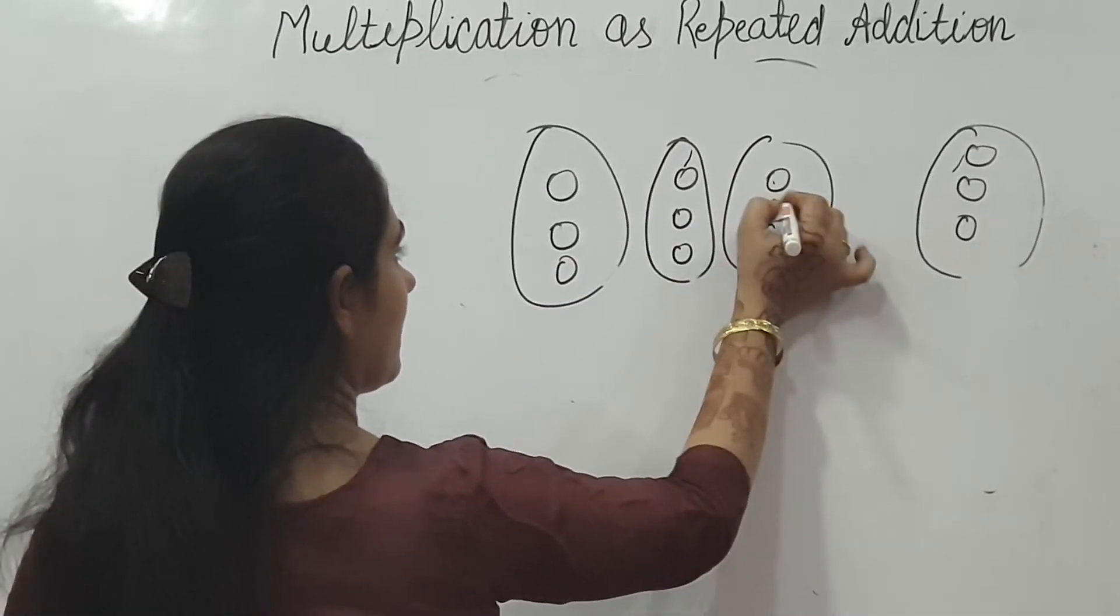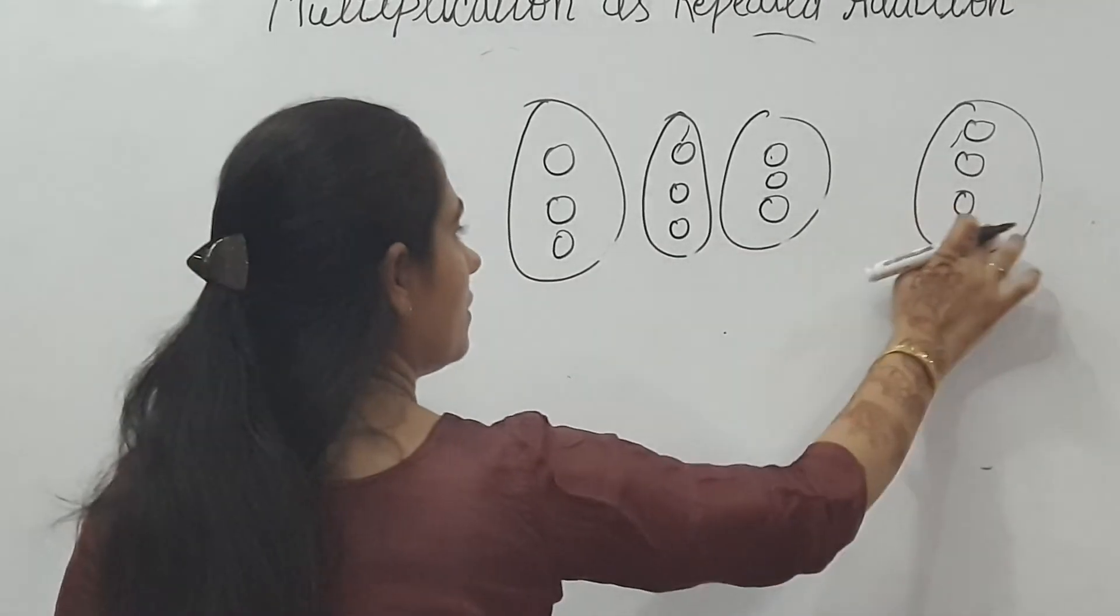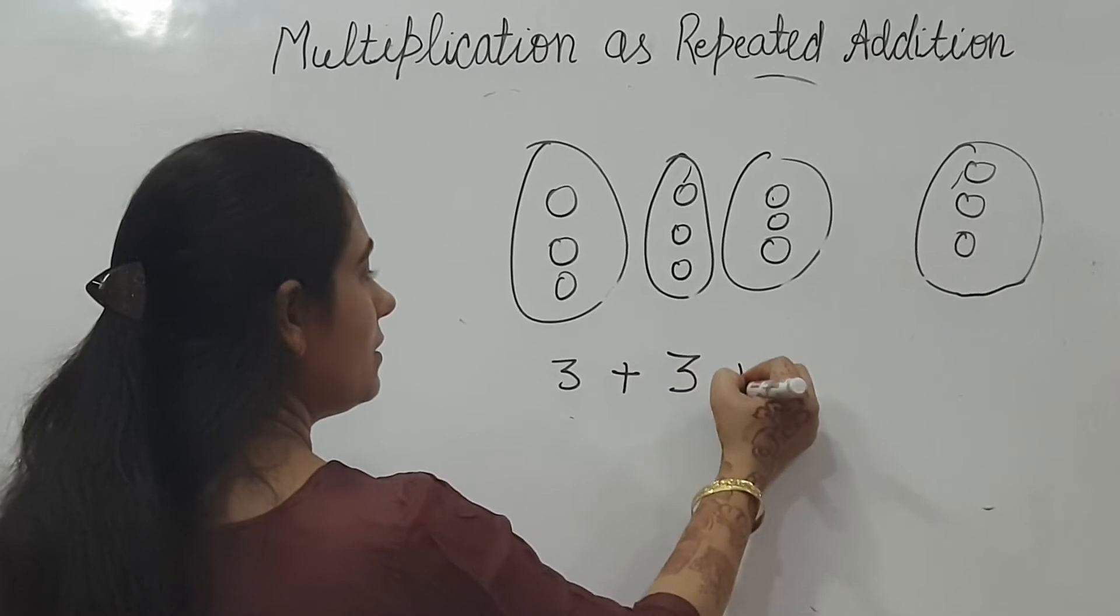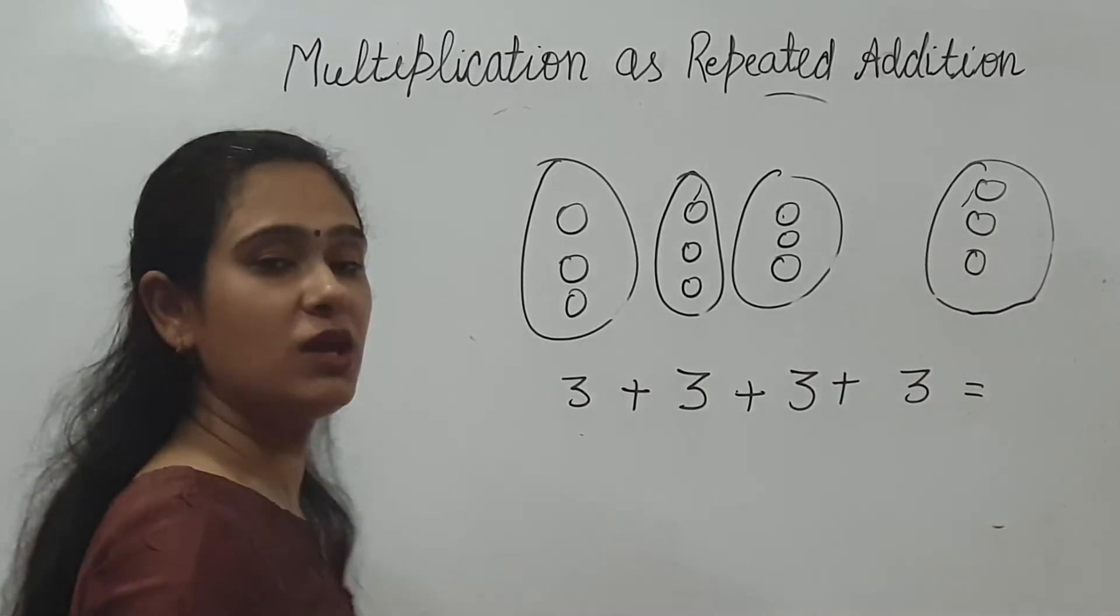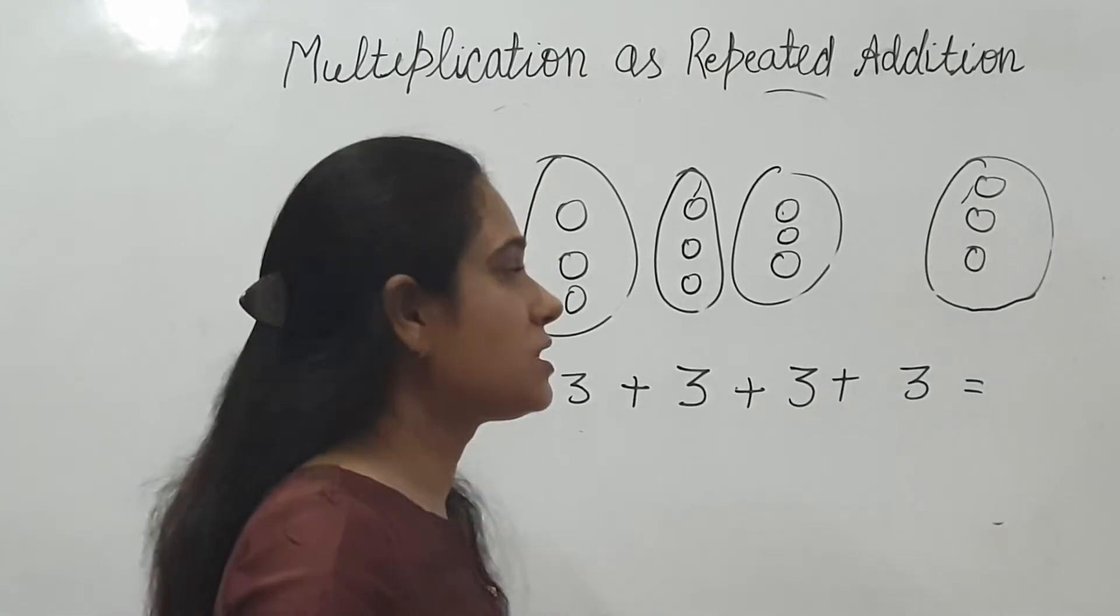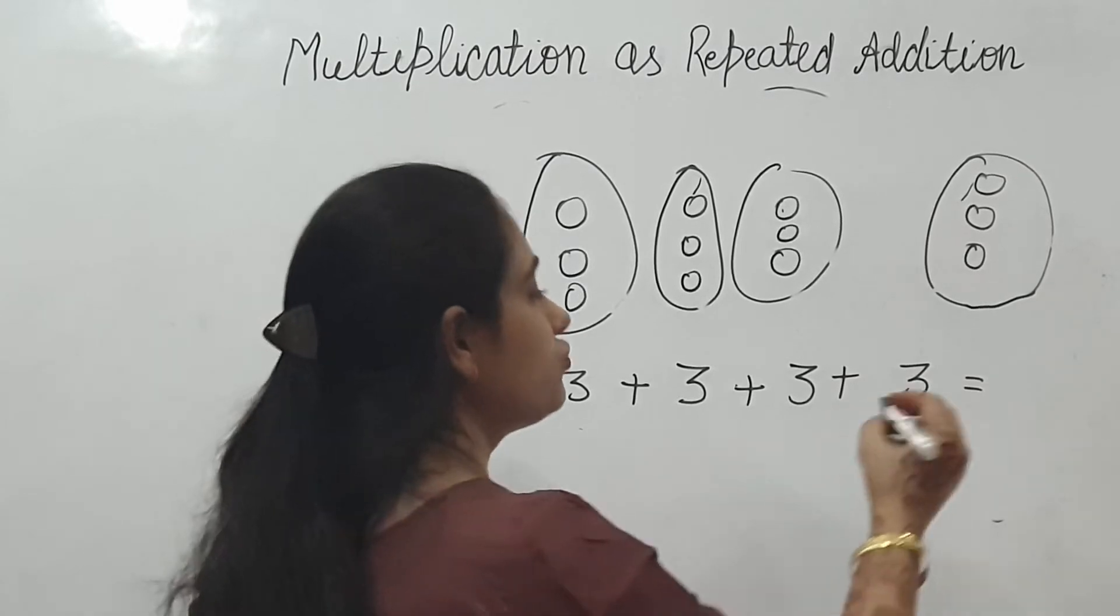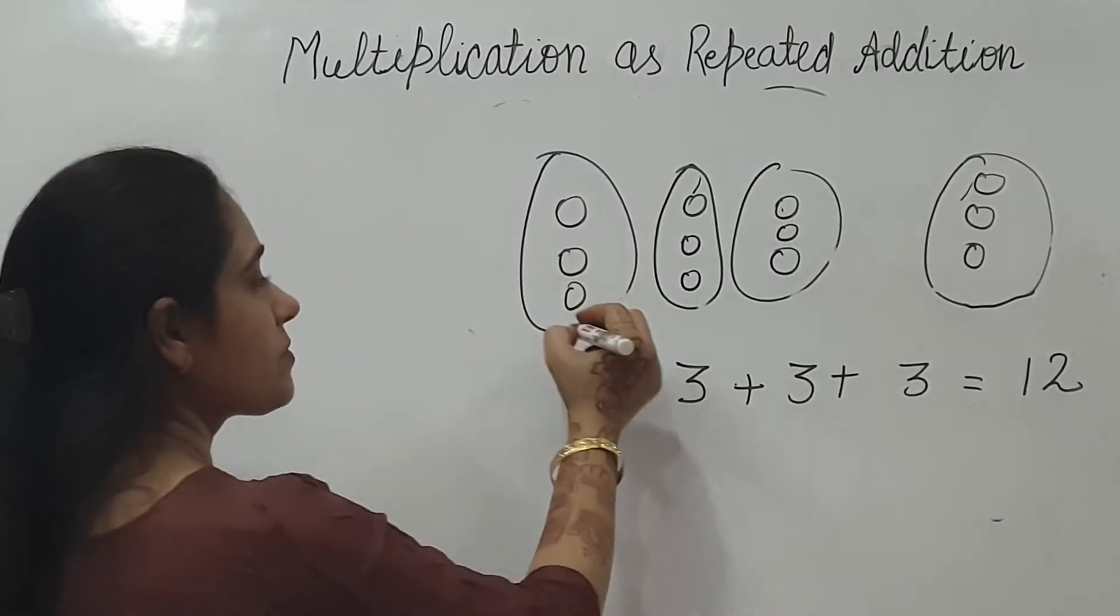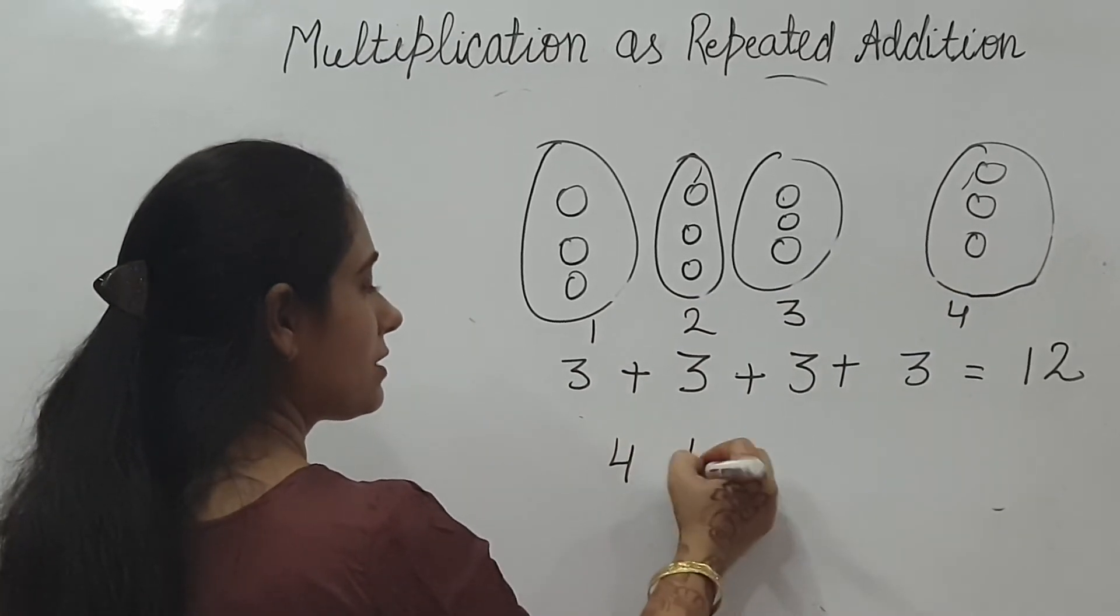You can see, 3 plus 3 plus 3 plus 3. 3 plus 3, 6. 6 plus 3, 9. 9 plus 3, 12. Now how do we write this? Count the groups. 1, 2, 3, 4. 4 times.